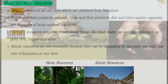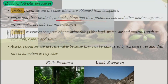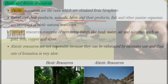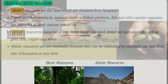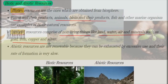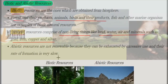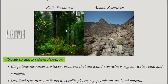Biotic resources are obtained from the biosphere — living things and their products — like forests, animals, birds and their products, fish, and other marine organisms. Abiotic resources come from non-living things like land, water, air, and minerals such as gold, copper, silver, iron, and aluminium. In the picture we can see the difference: biotic from living things like forests and animals, abiotic from non-living things like rocks and minerals.